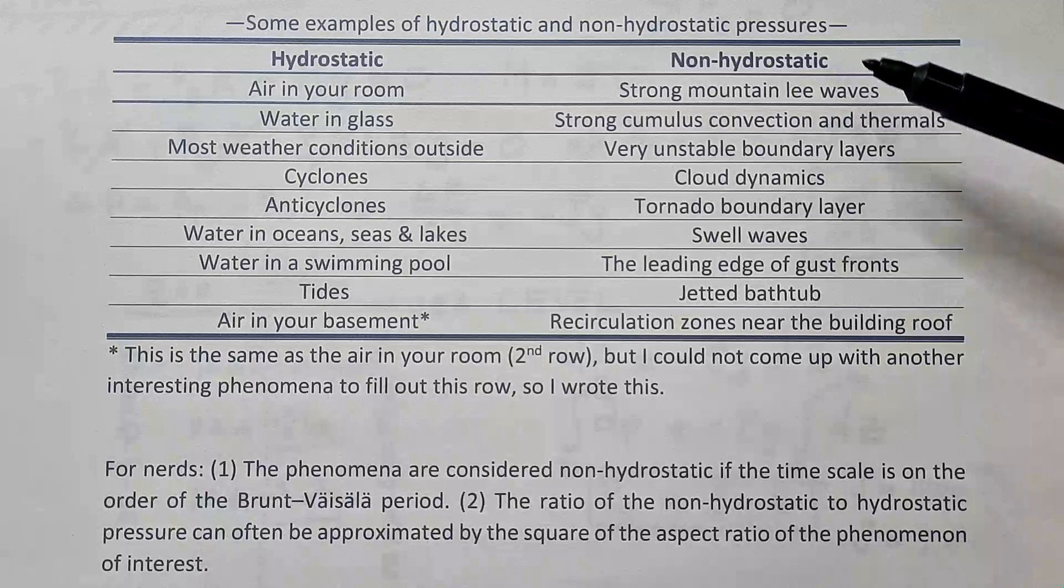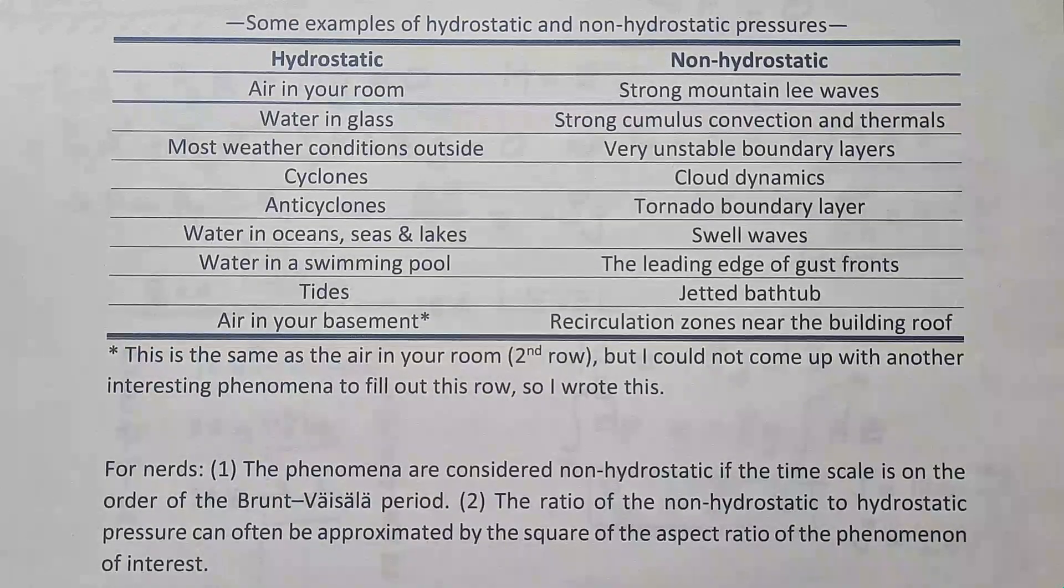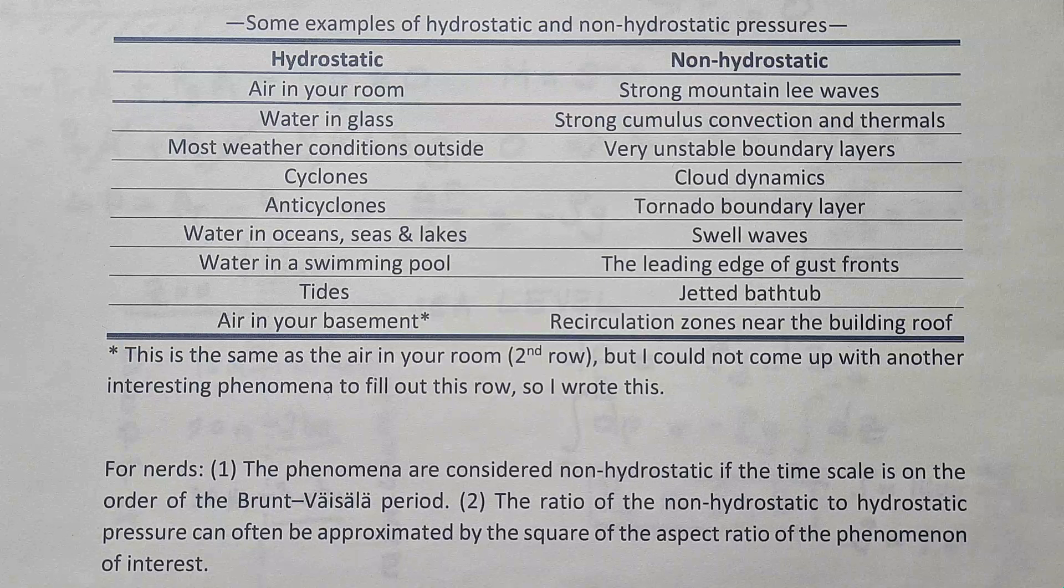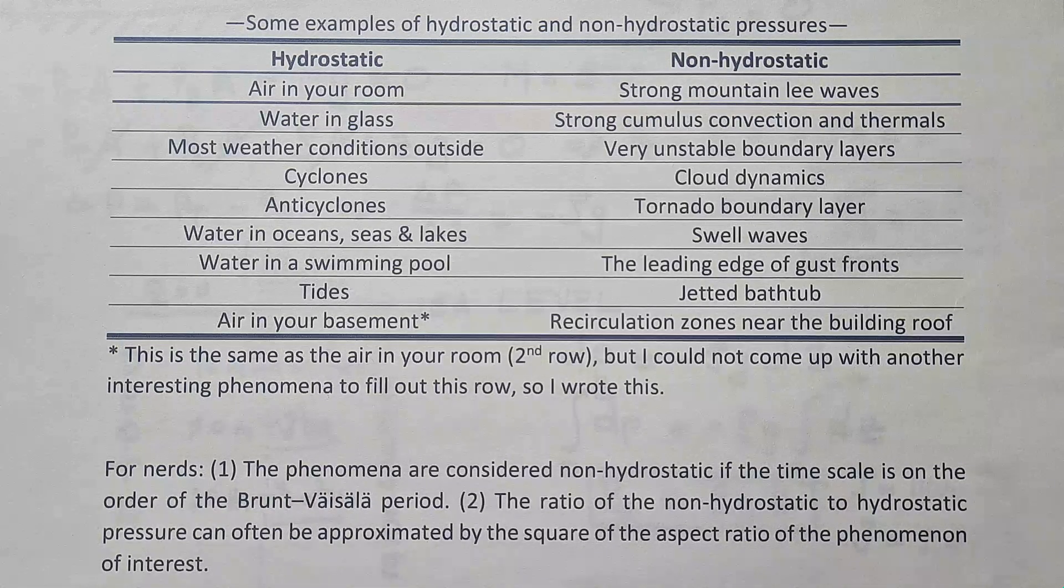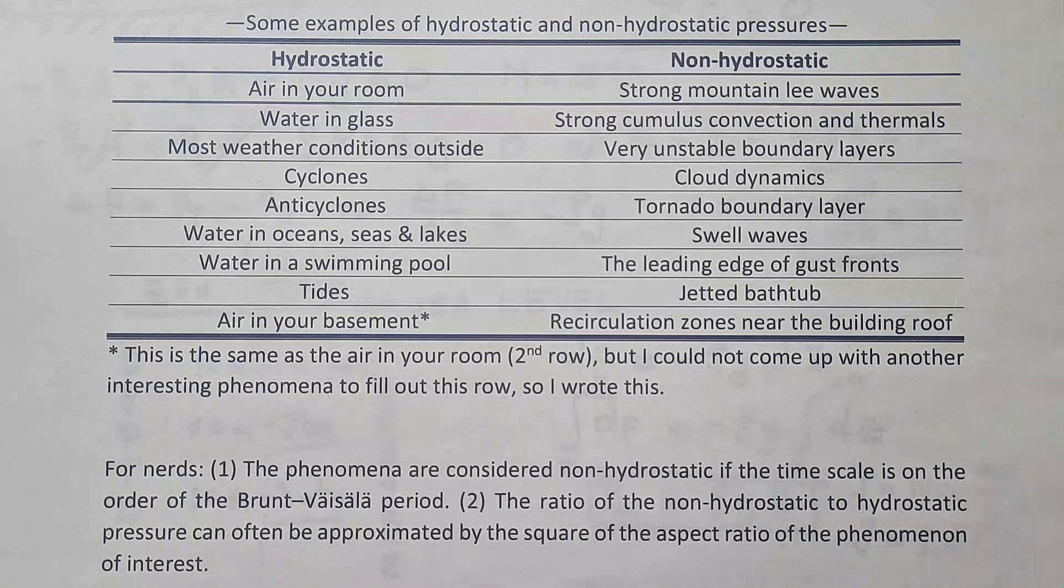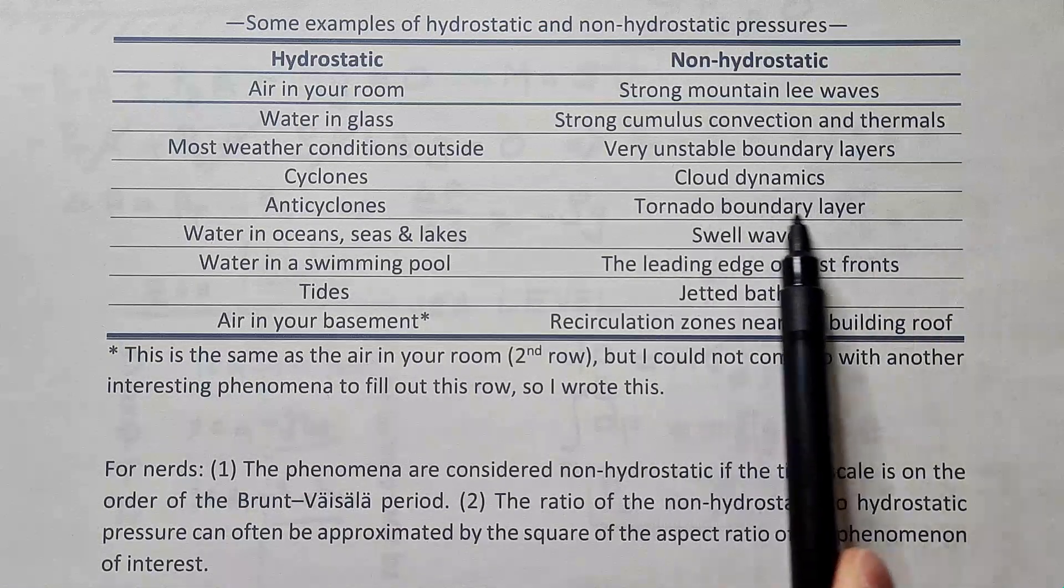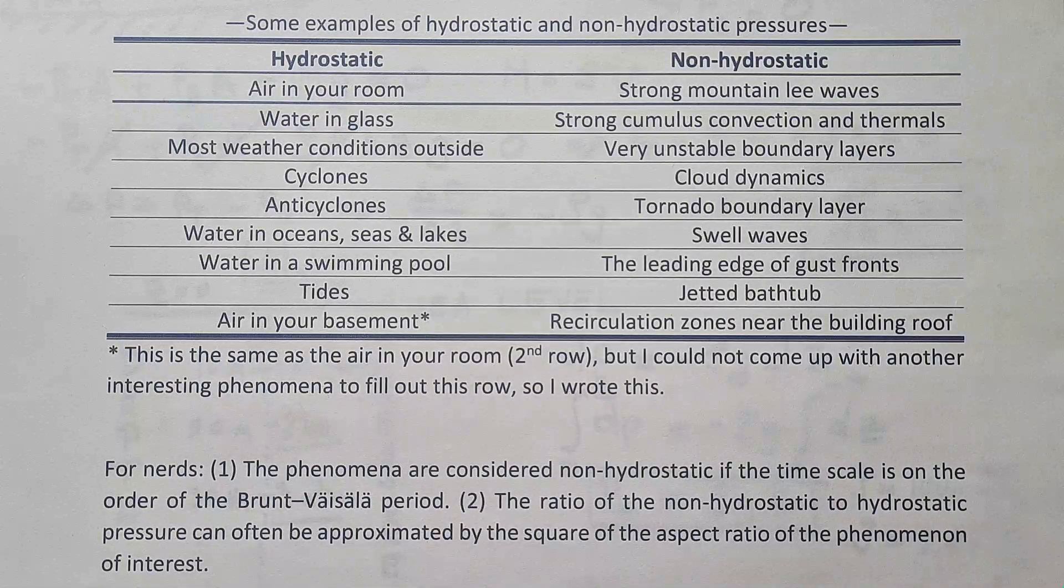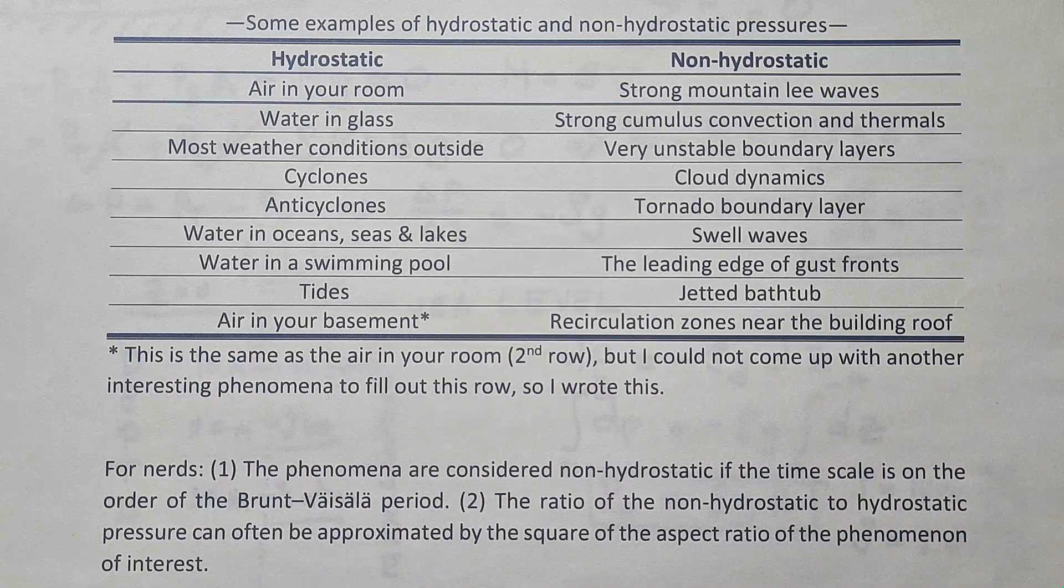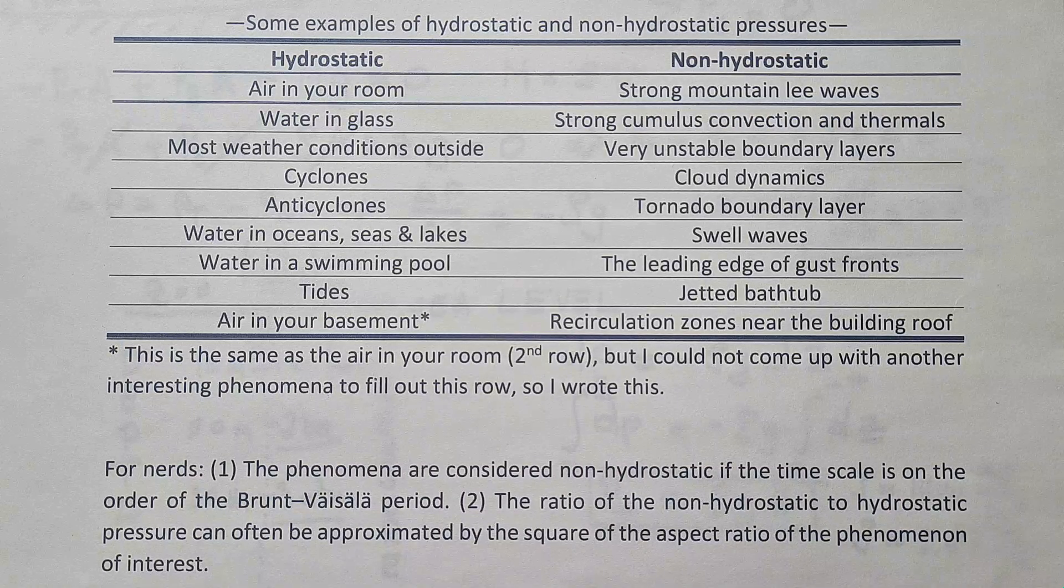Non-hydrostatic phenomena: strong mountain-lee waves, very pronounced cumulus convection and thermals in the atmosphere, extremely unstable boundary layers, many phenomena related to cloud dynamics, such as air entrainment and so on. Tornado boundary layer, for example, tornado vortex, sufficiently far away from the surface, is to a pretty good approximation in hydrostatic equilibrium. But close to the surface, it is non-hydrostatic.